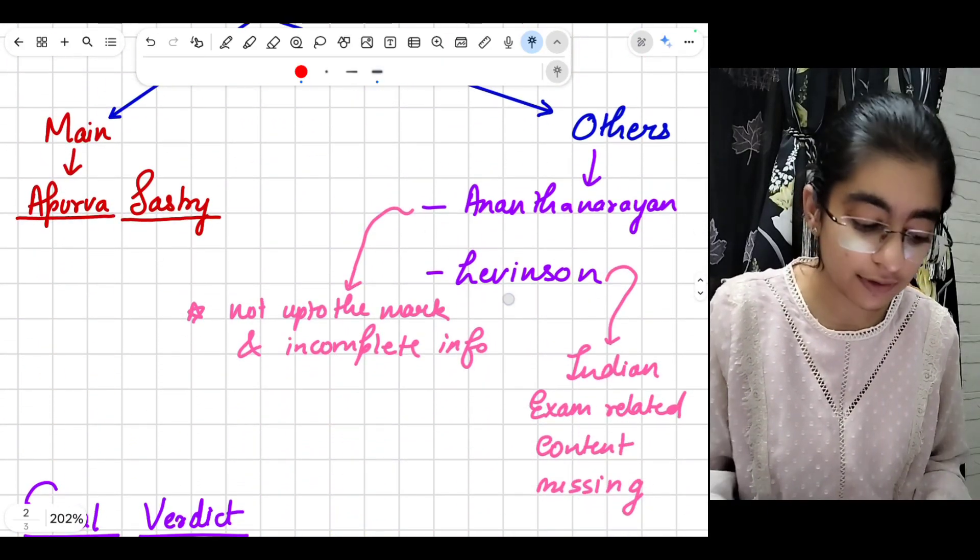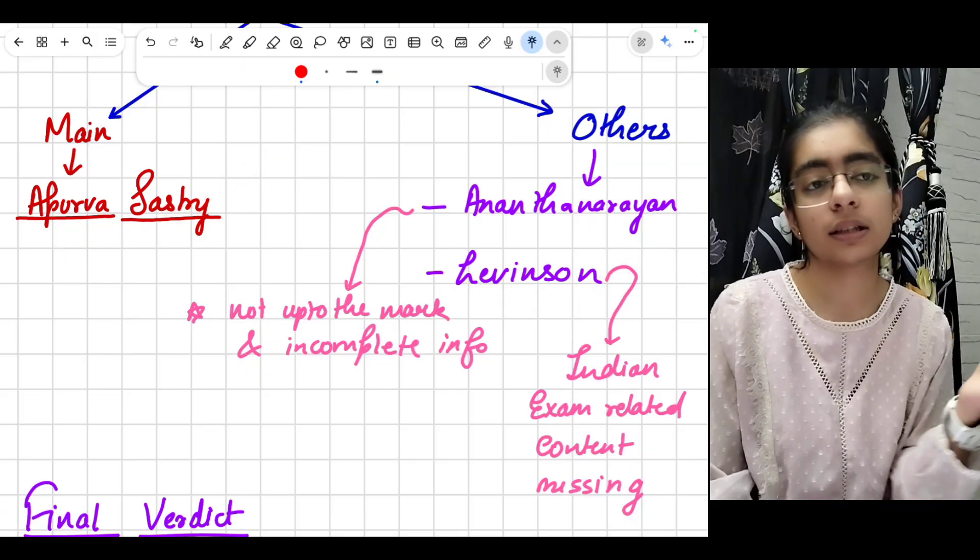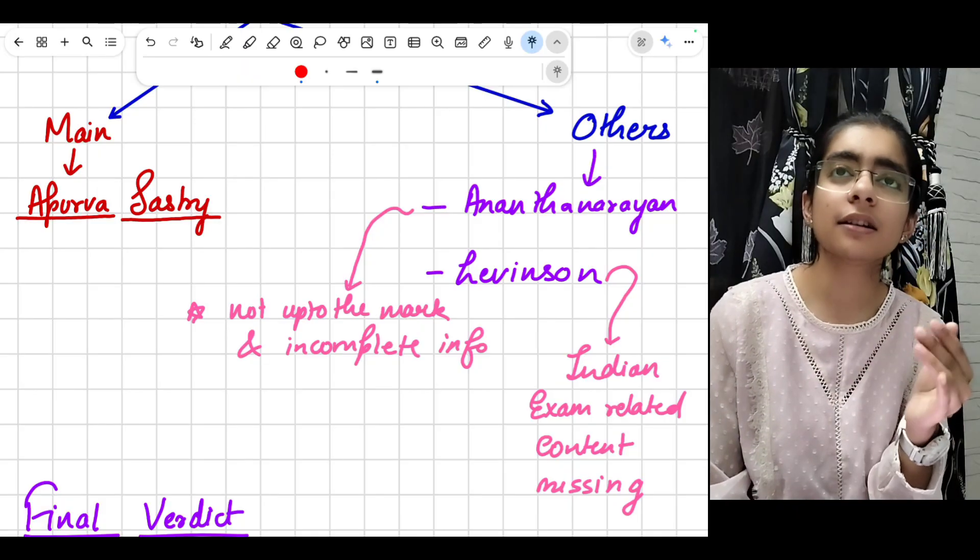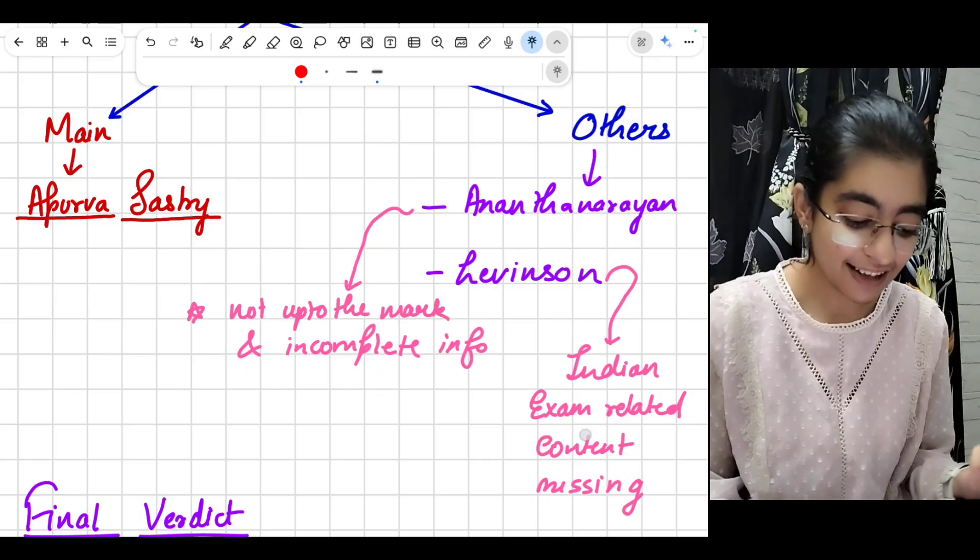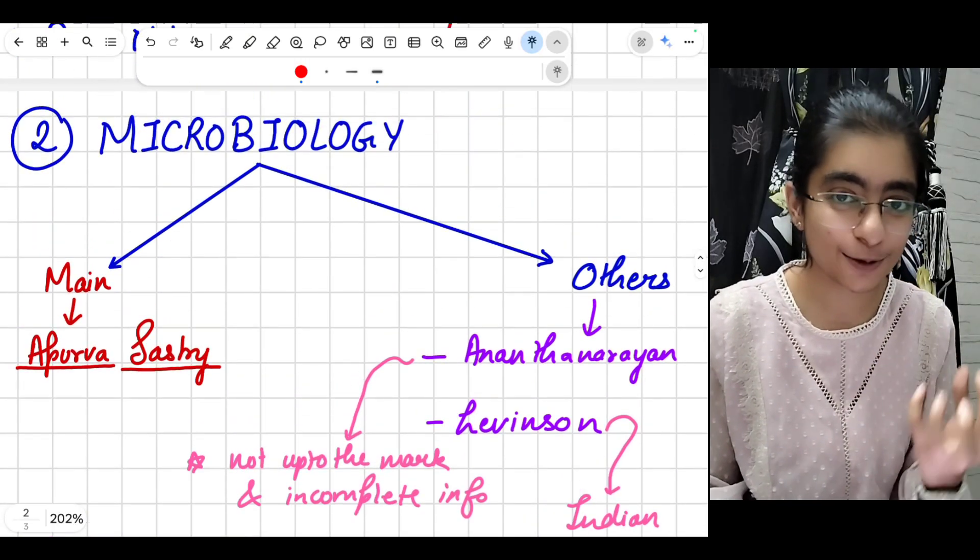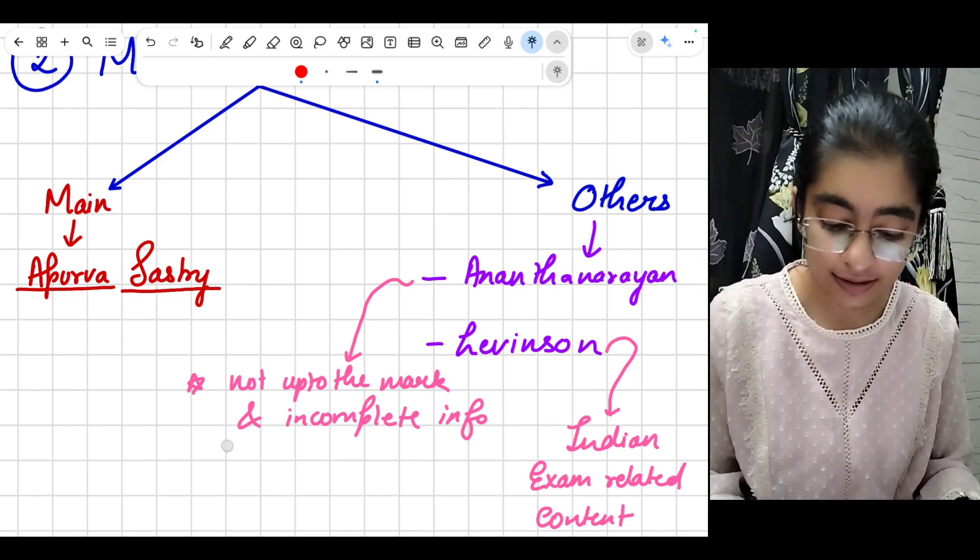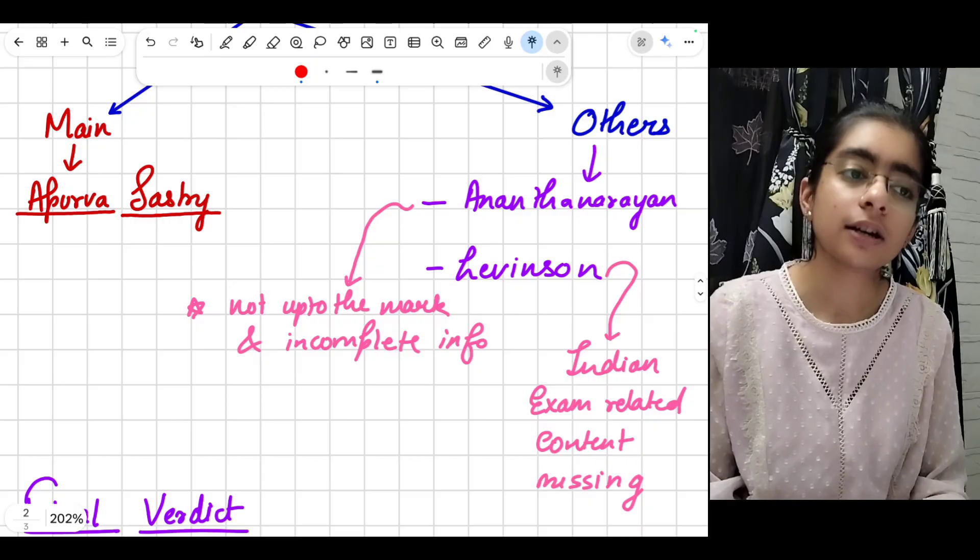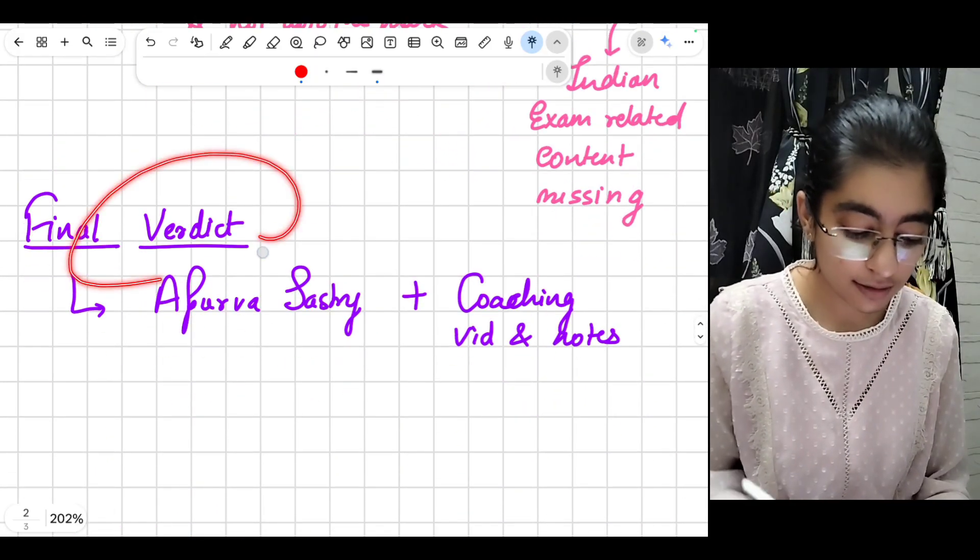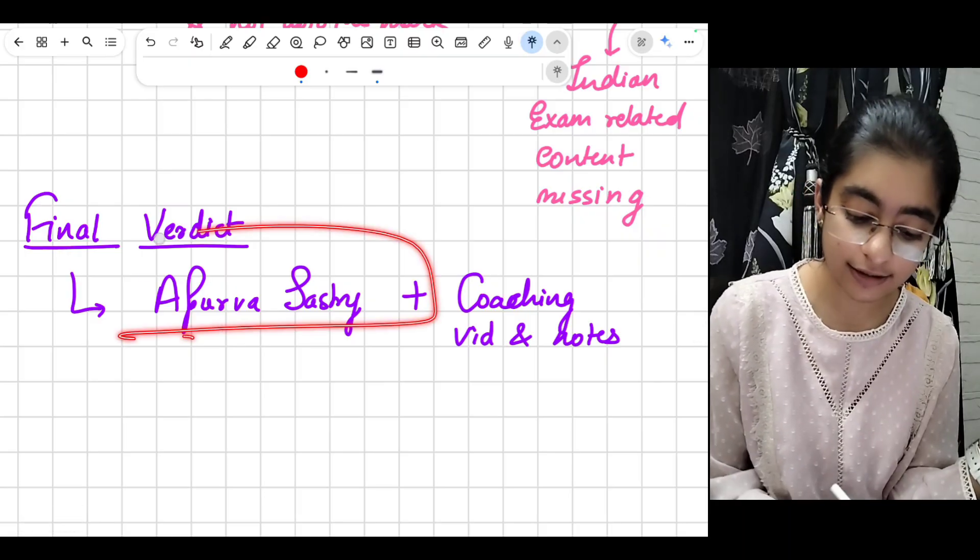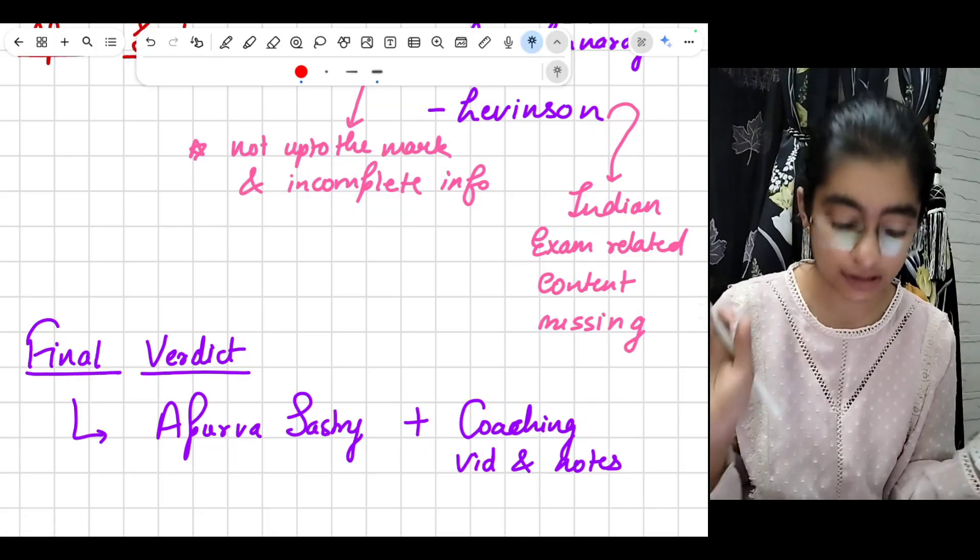Shastri is better, everyone knows that. Levinson is good for concepts, just like I told you Robbins plus Ramdas Naik. Follow a combination of Levinson plus Shastri. Levinson is a very light book and there is less information, but it deals on concepts and you will get a good feeling after reading micro. Personally speaking, I read only few topics from Levinson just to get an idea, but Shastri is the main resource. The final verdict for micro is that Apoorva Shastri plus coaching video or notes, as Levinson is just optional and up to your discretion.